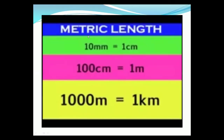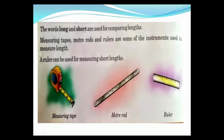These are the common units of length: 10 millimeters is equal to 1 centimeter, 100 centimeters is equal to 1 meter, and 1000 meters is equal to 1 kilometer. The words 'long' and 'short' are used for comparing length. There are different tools to measure length — we use measuring tape, meter rod, and ruler. We use a ruler to measure short lengths, and measuring tape and meter rod to measure larger lengths.